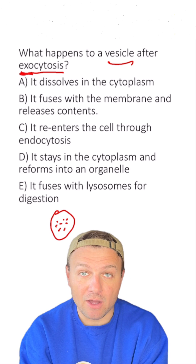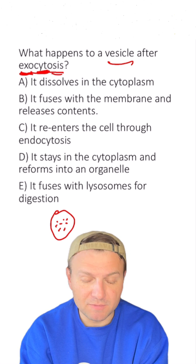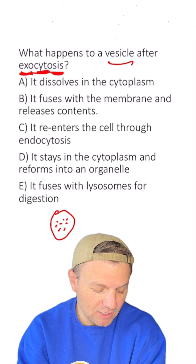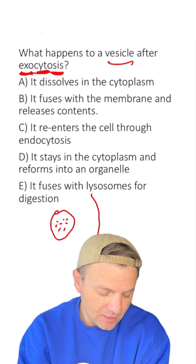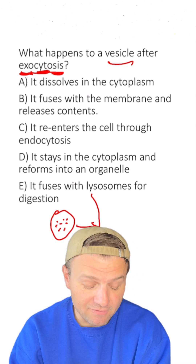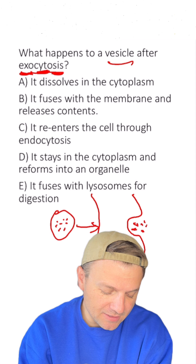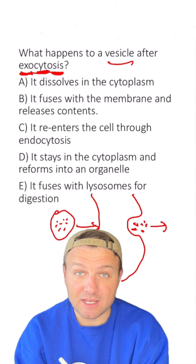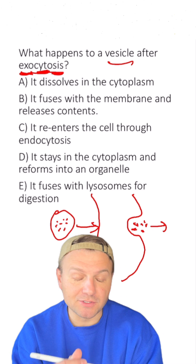Exocytosis — exo meaning out of, site meaning cell, and osis meaning basically the process of something. So this occurs when the cell is going to push contents out of itself by using these vesicles. These cells will have the vesicle fuse with its outer membrane and push those contents out.